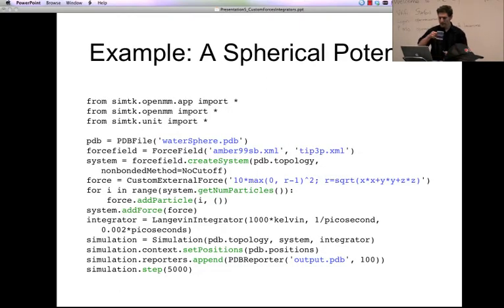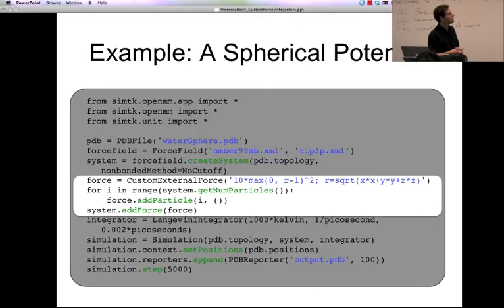So let's take a look at an example here. Let's suppose that you want to do a simulation, maybe a water droplet for example. And instead of doing it in periodic boundary conditions, you just want it to be in sort of a spherical potential, like a spherical container. And you want your atoms to be restrained, not be able to leave that sphere. And a very common way that people do this is with a harmonic potential that is spherically symmetric.